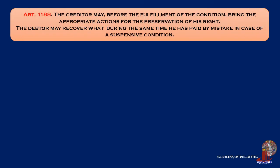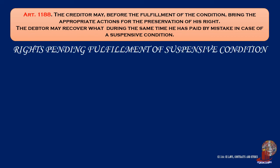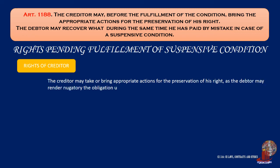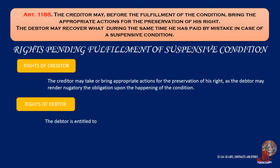Article 1188 states: The creditor may, before the fulfillment of the condition, bring the appropriate actions for the preservation of his right. The debtor may recover what during the same time he has paid by mistake in case of a suspensive condition. The article discusses rights pending fulfillment of a suspensive condition. First, rights of the creditor: he may bring appropriate actions for the preservation of his right, as the debtor may render the obligation nugatory upon the happening of the condition. Thus, he may go to court to prevent the alienation or concealment of the property the debtor bound himself to deliver, or to have his right annotated on the title to the property in the registry of deeds. As for the rights of the debtor, he is entitled to recover what he has paid by mistake prior to the happening of the suspensive condition. This right is granted because it is not certain that the obligation will arise.